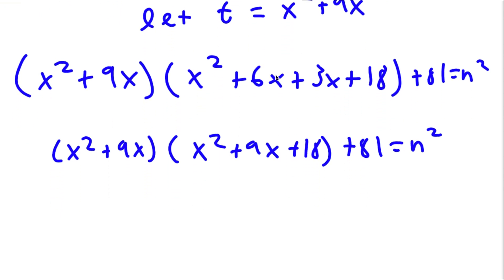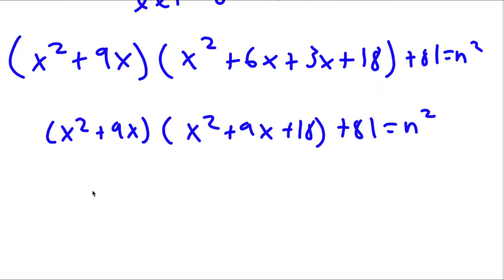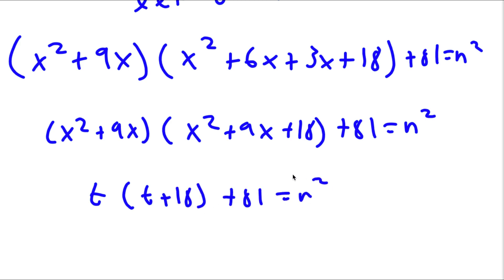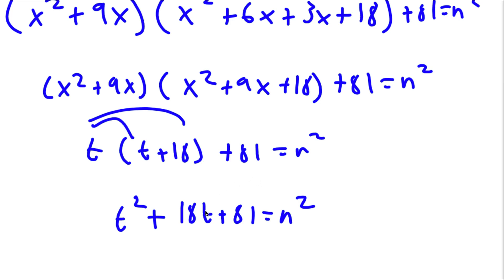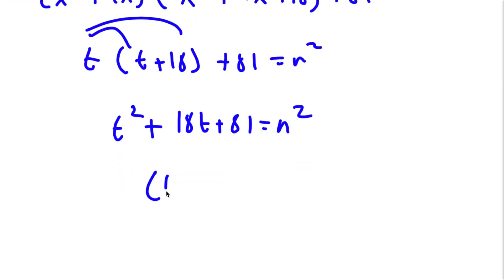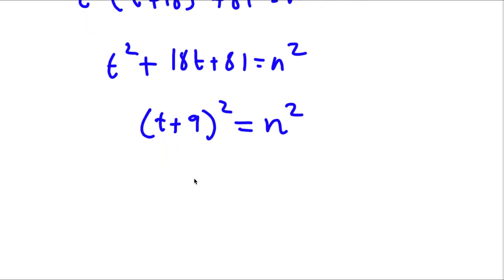Now since t equals x² + 9x, replacing gives t times (t + 18), plus 81, equals n squared. Distributing the t gives t² + 18t + 81 equals n squared. This is the same thing as (t + 9)², so (t + 9)² = n², meaning t + 9 = n.